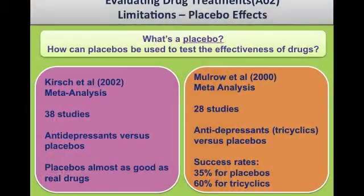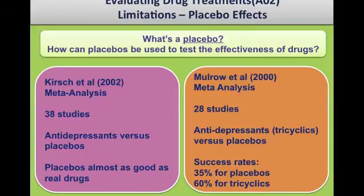A limitation of drug therapies: there have been meta-analyses where placebos are almost as good as real drugs, questioning the point of real drugs — that was Kirsch (2002). On the other hand, Mulrowe (2000) did a meta-analysis and found tricyclics were 60% effective whereas placebos were only 35% effective. There are many meta-analyses giving evidence both for and against.